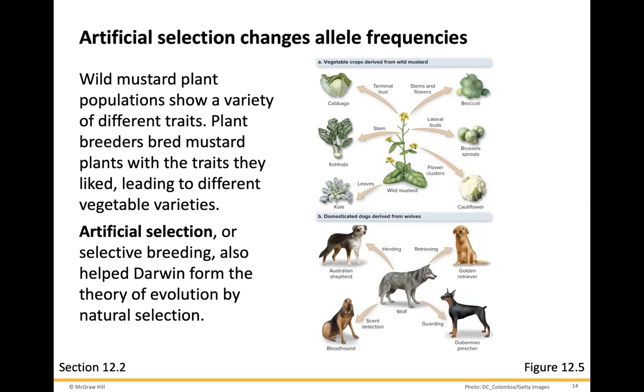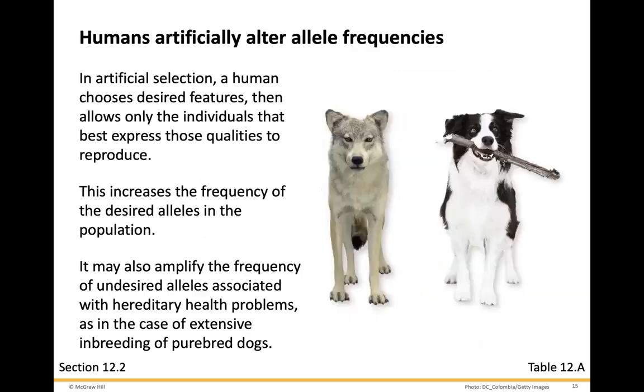This is done in agriculture all the time, where they'll take components of one type of apple and breed it with another type of apple to create a new apple. Humans artificially alter allele frequencies — in artificial selection, a human chooses desired features, then allows only the individuals that best express those qualities to reproduce, increasing the frequency of desired alleles. It may also amplify the frequency of undesired alleles associated with health problems, such as in cases of extensive inbreeding of purebred dogs.